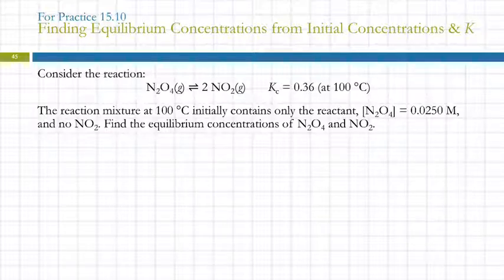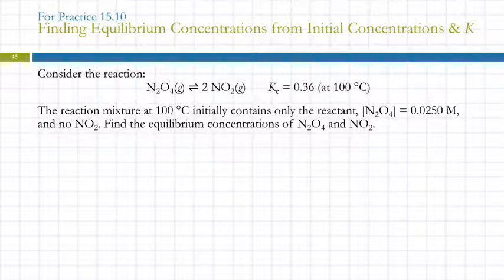Here's another example: N₂O₄ going to 2NO₂, with the equilibrium constant given at 100 degrees. The reaction mixture starts with only the reactant. Find the concentrations at equilibrium.